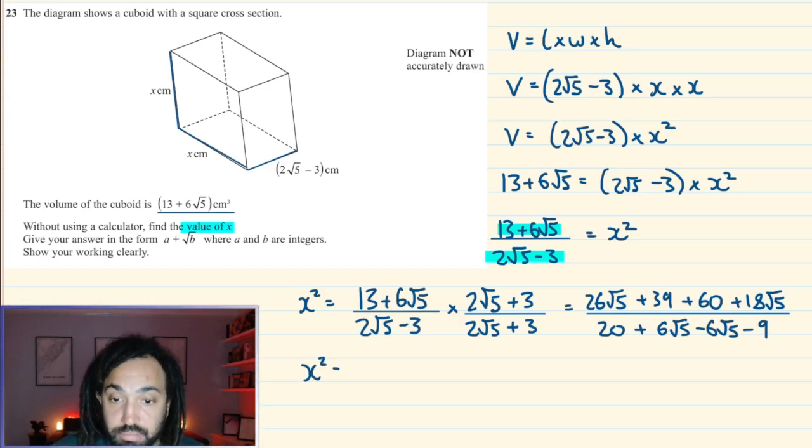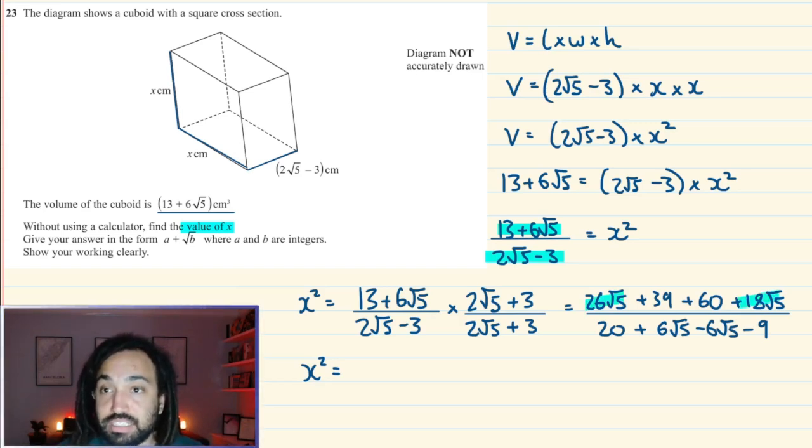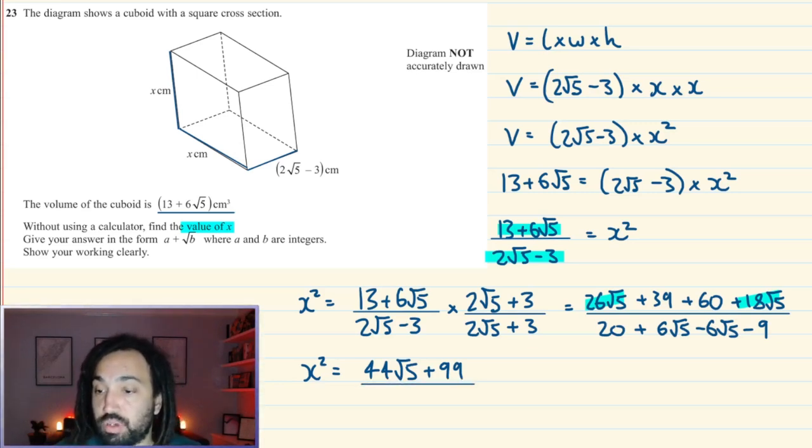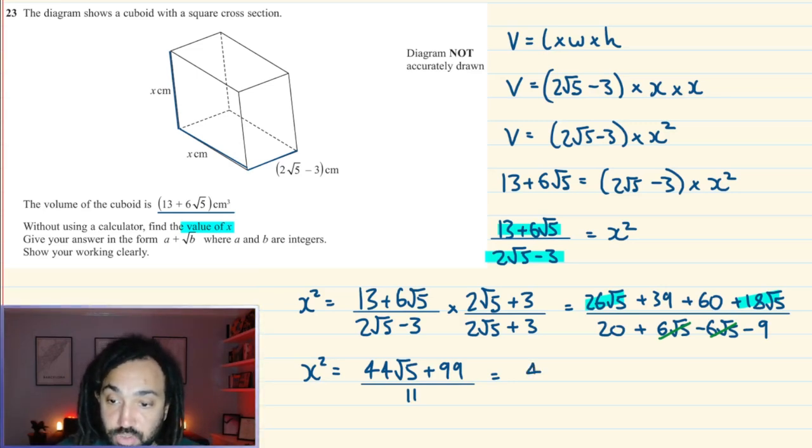Okay, lovely. Right, let's tidy this up. So on the numerator, how many √5s have we got? We've got 26 and we've got 18, so that is a total of 44. So 44√5. And in terms of the rational numbers, 39 add 60 is 99. And that's all over, well, these two are going to cancel. And then we're going to have 20 minus 9 is 11. Perfect. This can simplify, because I can divide both terms on the top by 11. So dividing through by 11 gives me 4√5 and it gives me plus 9.